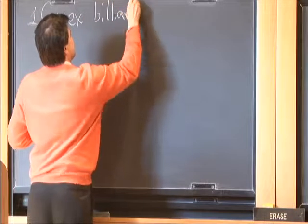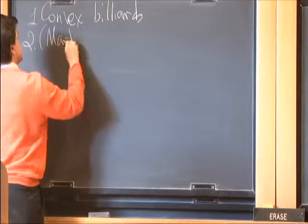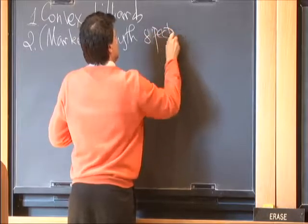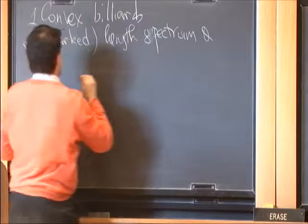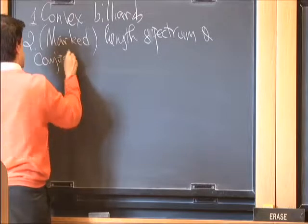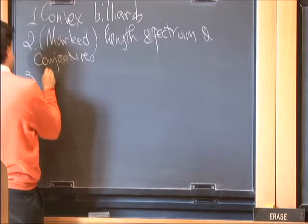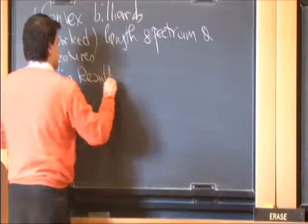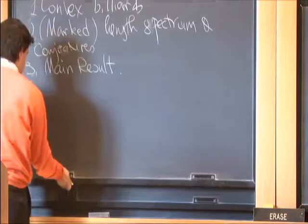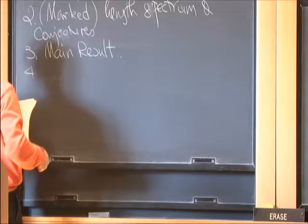I'll start with convex billiards as my main mathematical model, and then I'll introduce the so-called lens spectrum and mention a variety of conjectures, which were mainly posed by Melrose and Guillemin. After this, I'll state the main result, which is motivated by one of those conjectures. The main result plus a certain extension problem could solve one of those conjectures.